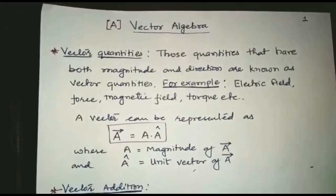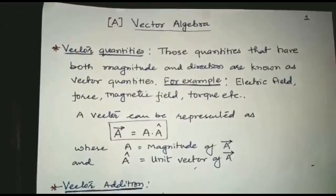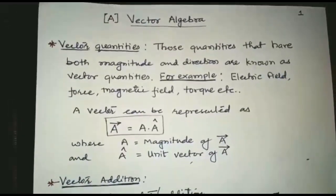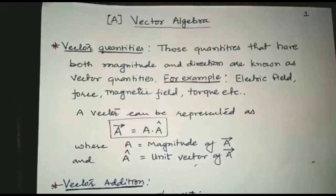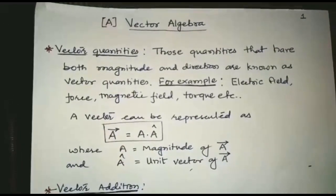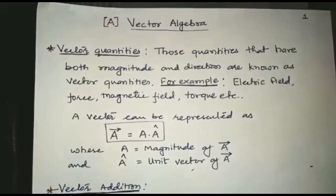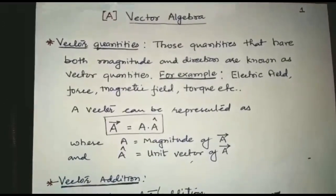A vector can be represented as vector A equals A dot A cap, where A is the magnitude of vector A and A cap is a unit vector of vector A.